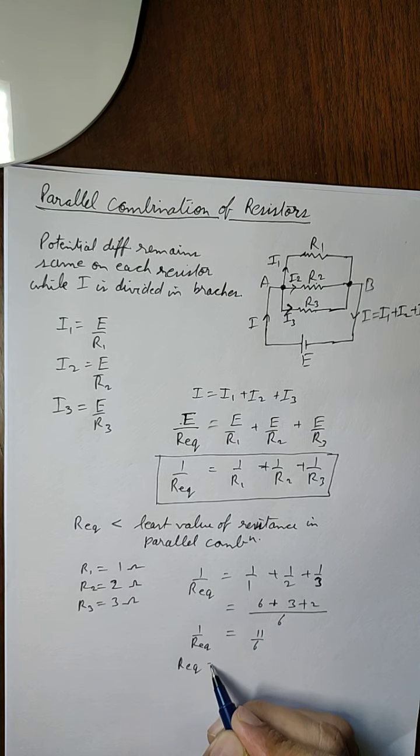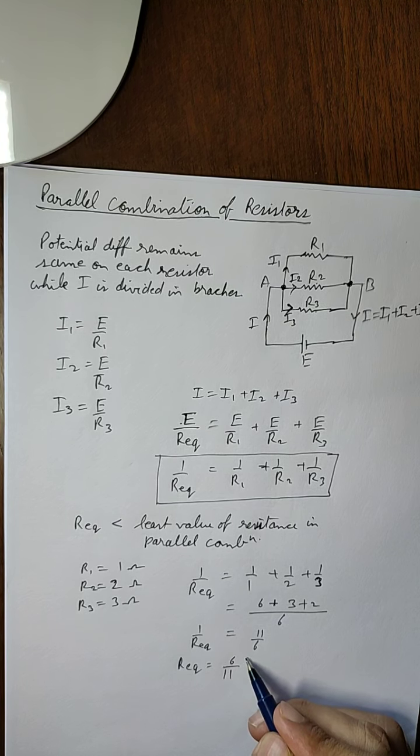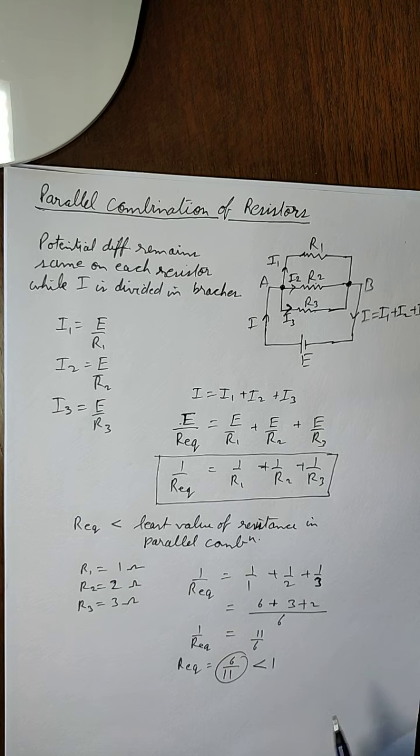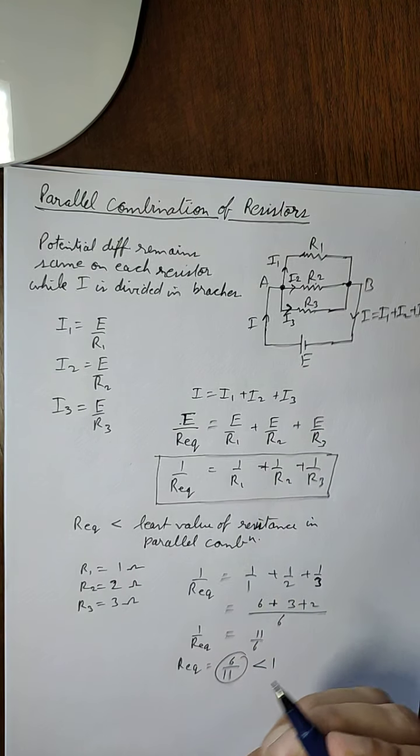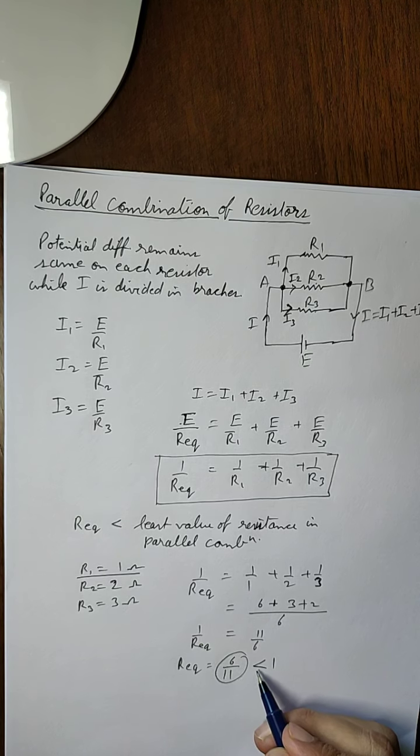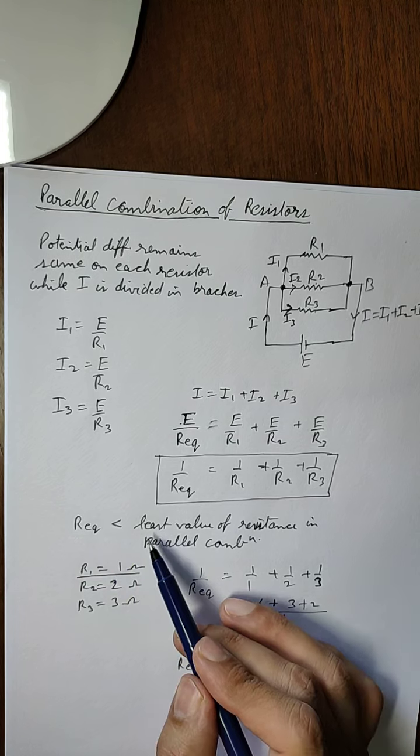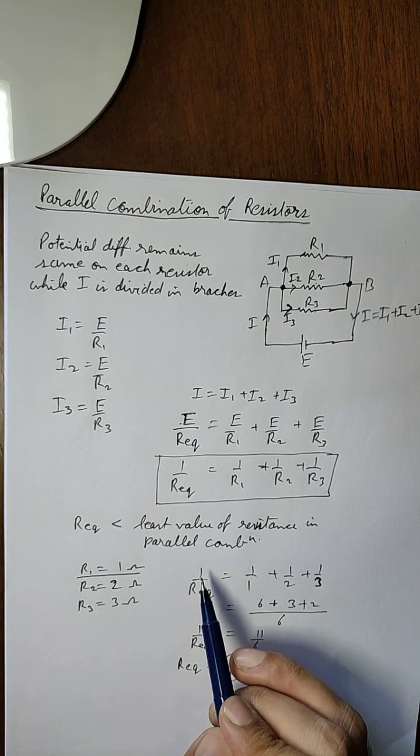You can see that this value is less than 1. Now the least value of the combination is 1 ohm, and R equivalent has come out to be less than 1. So this means that R equivalent will be less than the least value of resistance in parallel combination.